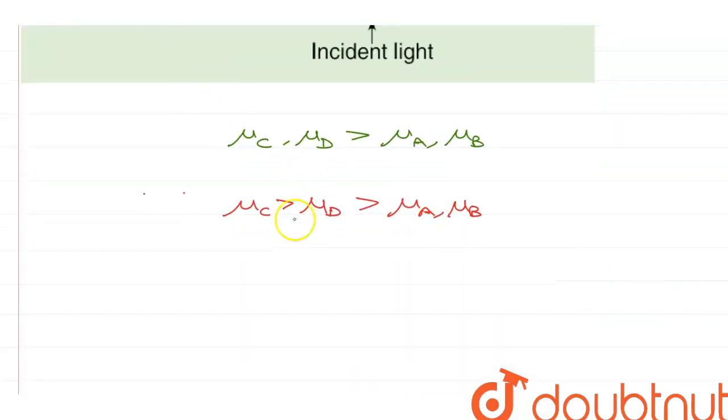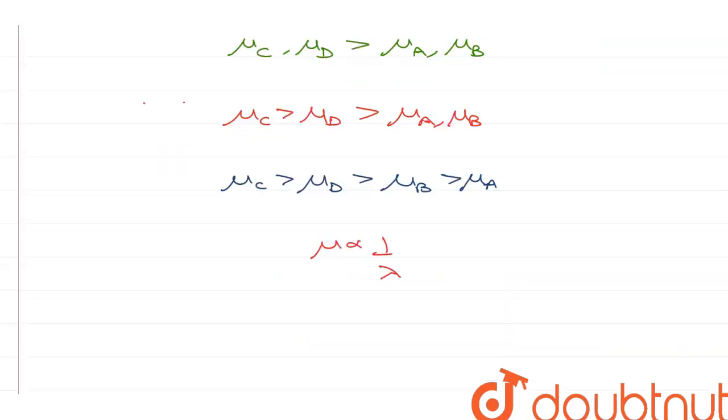So, the final order becomes mu C is greater than mu D is greater than mu B is greater than mu A. Now, mu is inversely proportional to lambda, so if I want to arrange these according to their wavelengths, the order will simply reverse, so lambda C is less than lambda D, is less than lambda B, is less than lambda A.